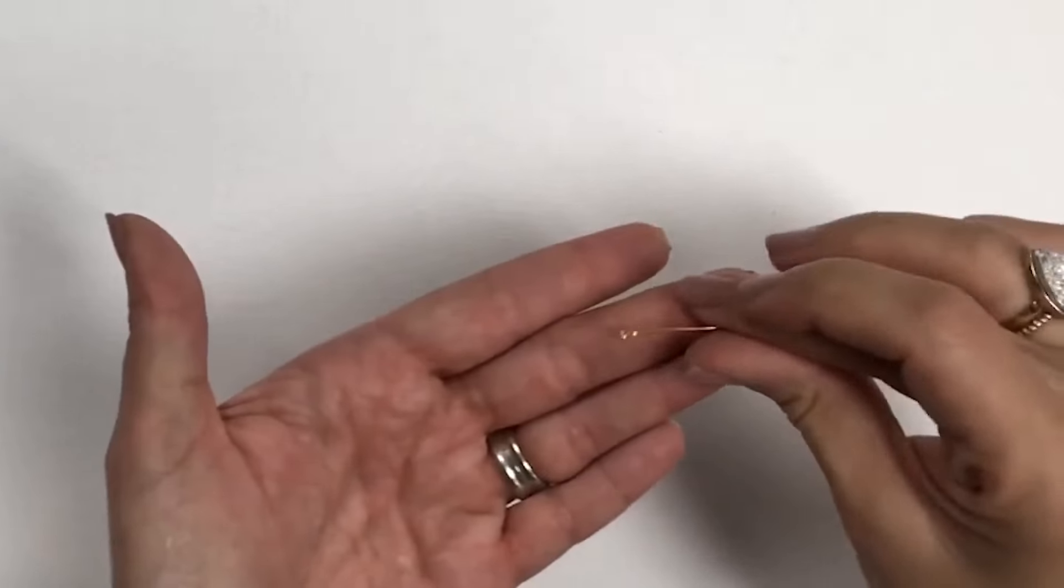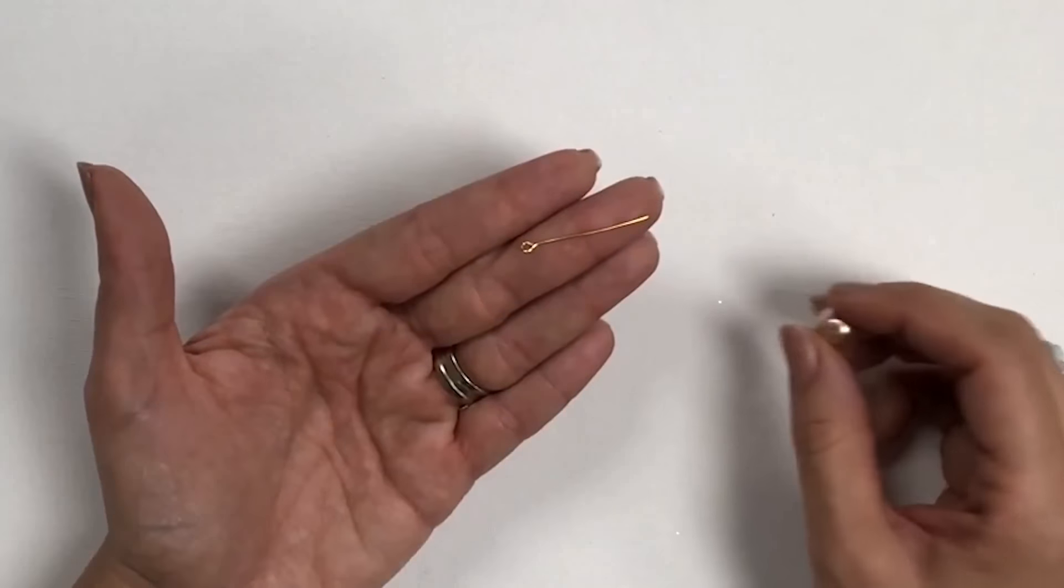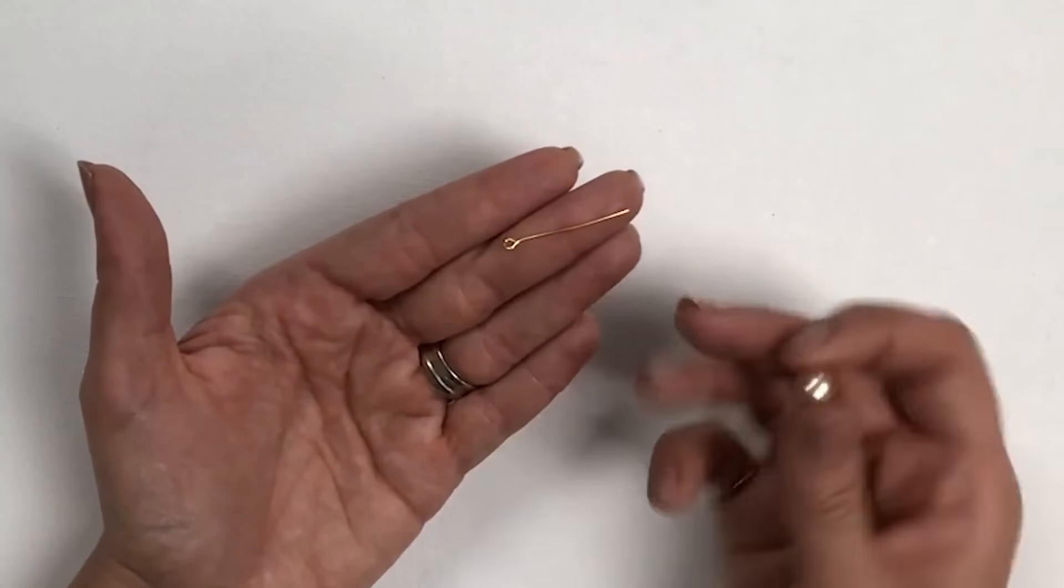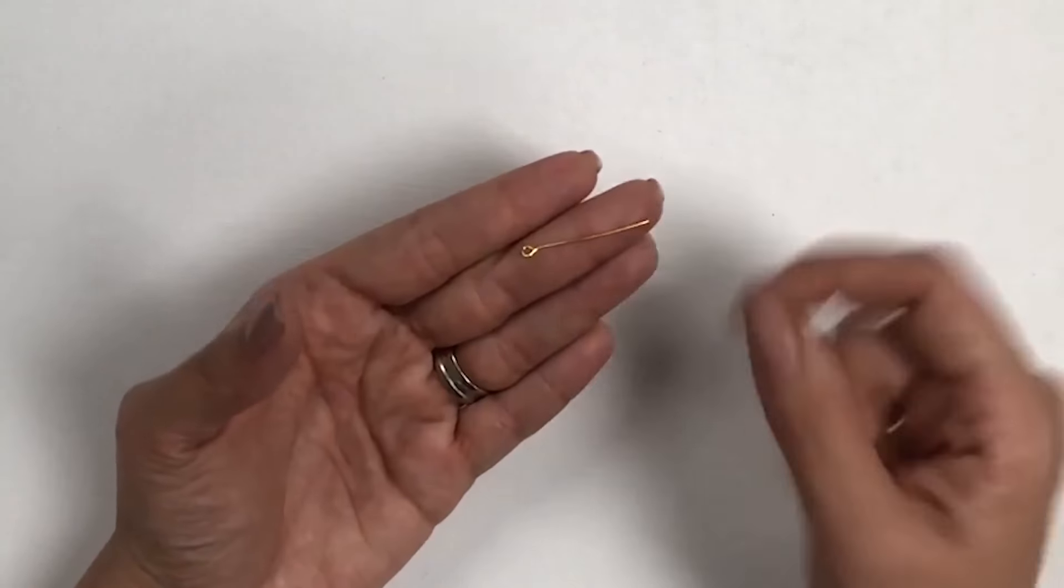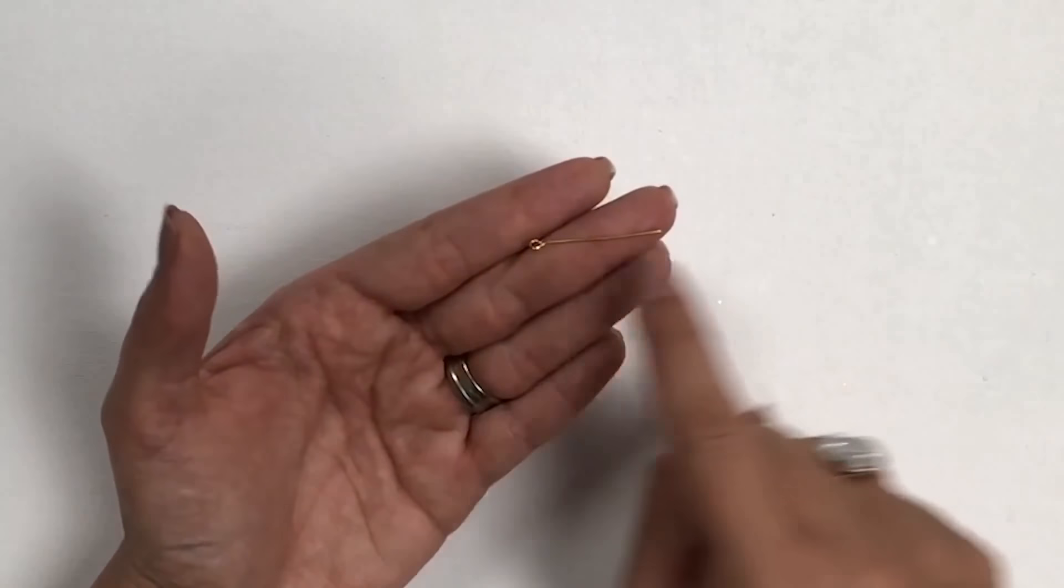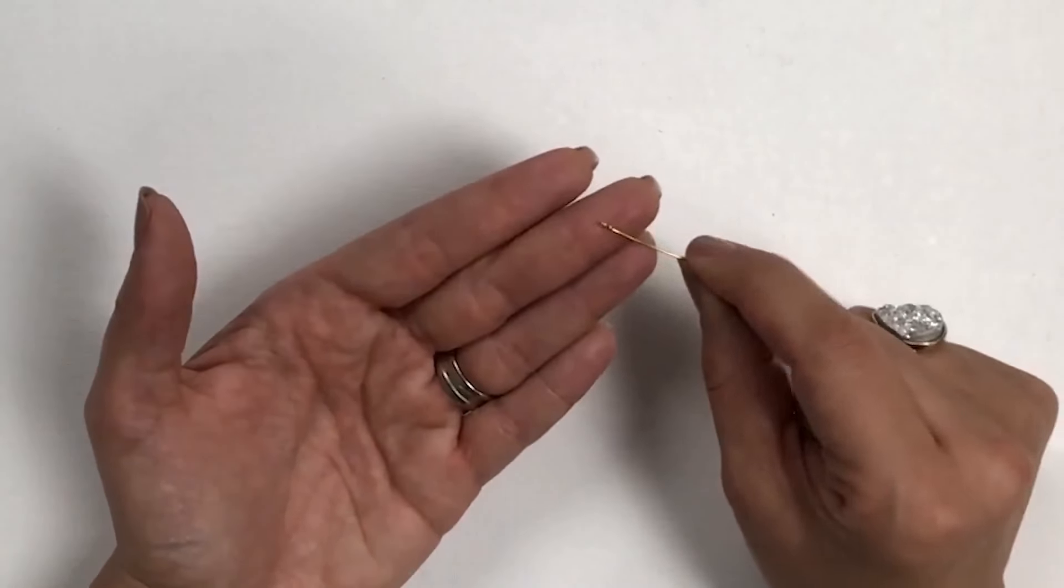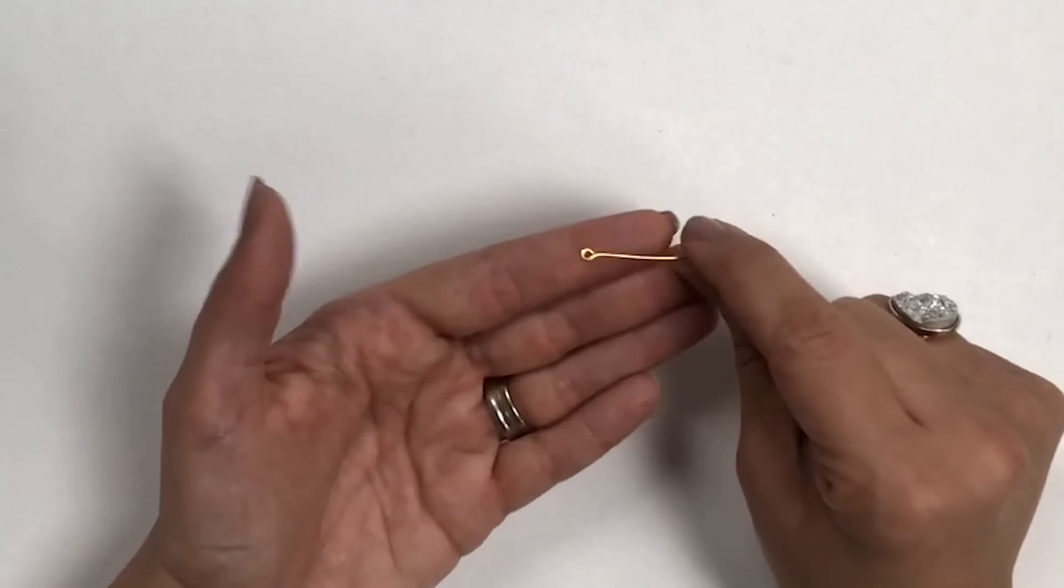Today I'm going to show you what an eye pin is used for and how to cut it down and make a loop on the other side. This is an eye pin – it's basically a straight pin, a little thicker than a needle, with a loop on the end of it.